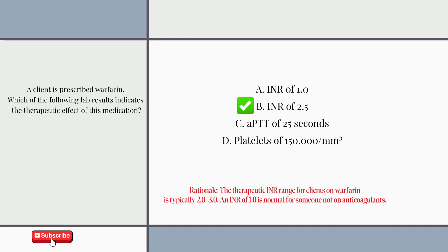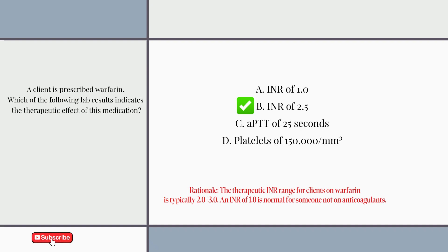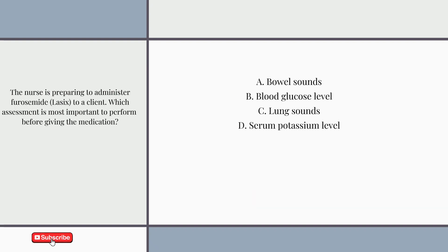Answer: B. INR of 2.5. The therapeutic INR range for clients on warfarin is typically 2.0 to 3.0. An INR of 1.0 is normal for someone not on anticoagulants.